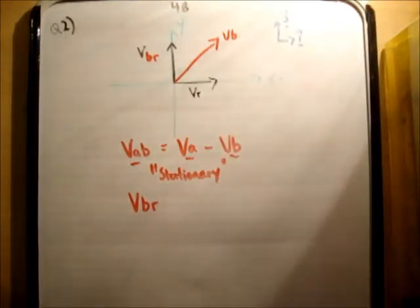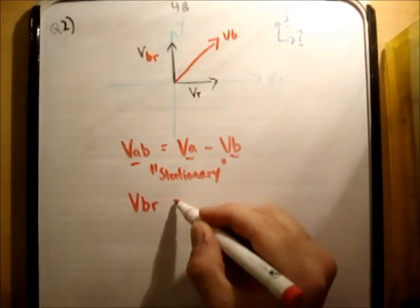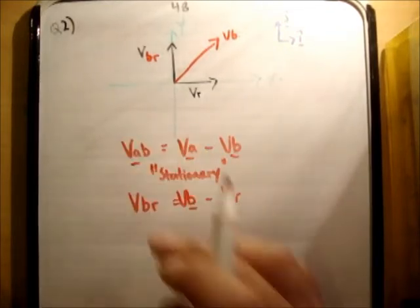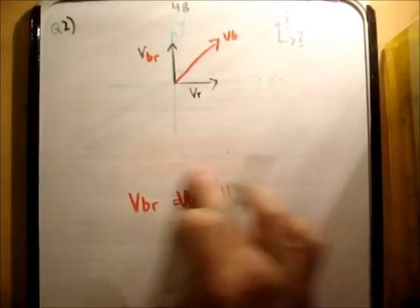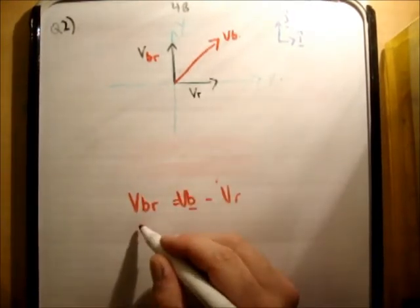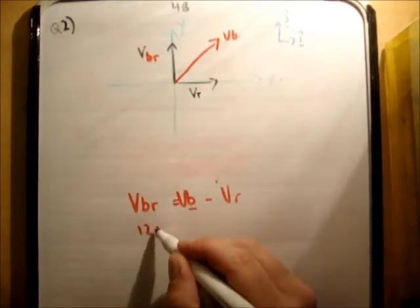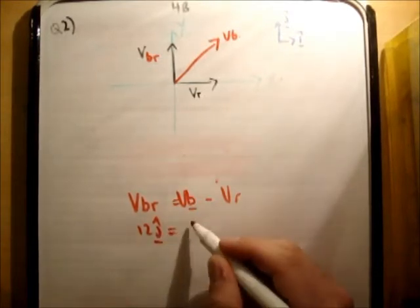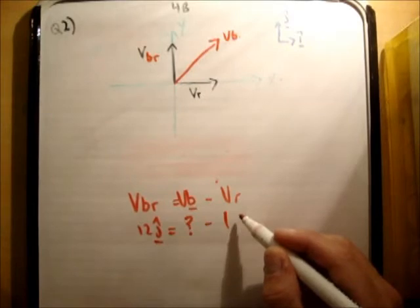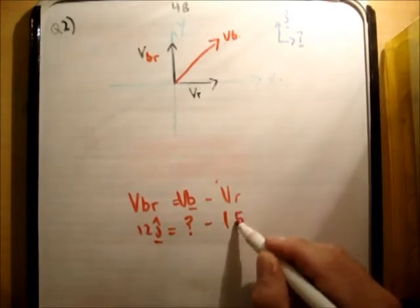So the next thing we need to do is put in any other information that we have. We don't have any other information. So we know that V, B, R is equal to V, B minus V, R. Alright? Now what do we know? So, we know that the V, B, R is equal to 12, j hat, V, B is unknown, and V, R is equal to 5, i hat.